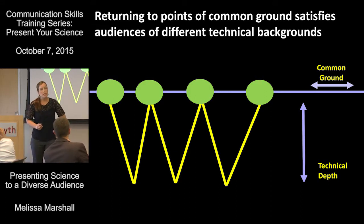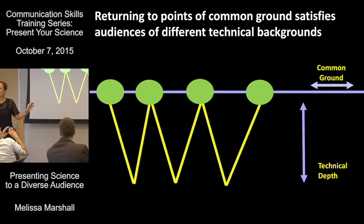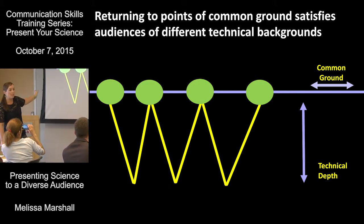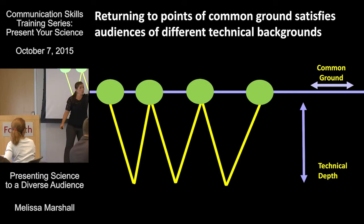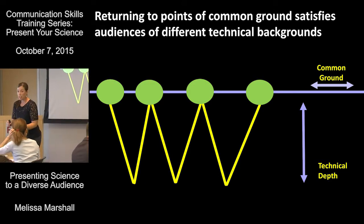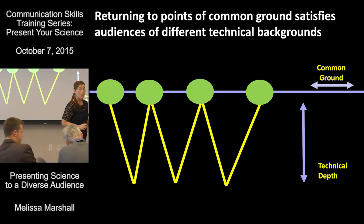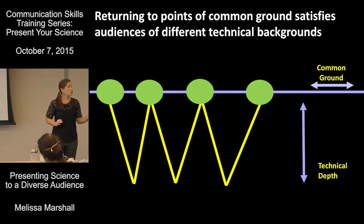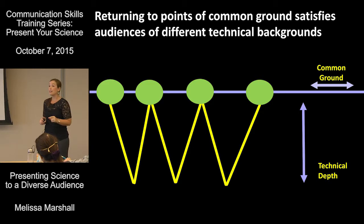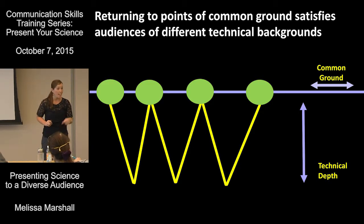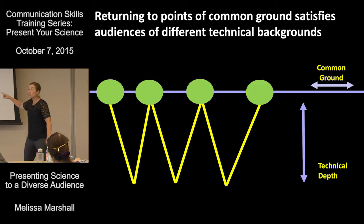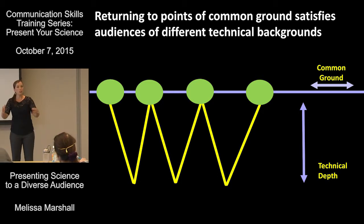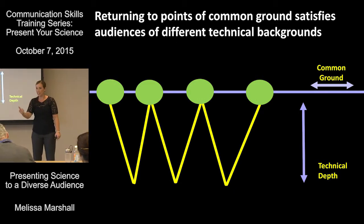One important distinction on the visual you're seeing here: notice how the interval is shorter at the beginning. If you think of this as a timeline of the talk, the interval is shorter here than as you go through, and that's on purpose. You need to return to these points of common ground more often in the beginning. It's all about establishing that relationship of trust, especially with the non-technical people, who often come to a scientific talk expecting not to get much from it. You have an awesome opportunity to show them otherwise, and you have to make that case early.